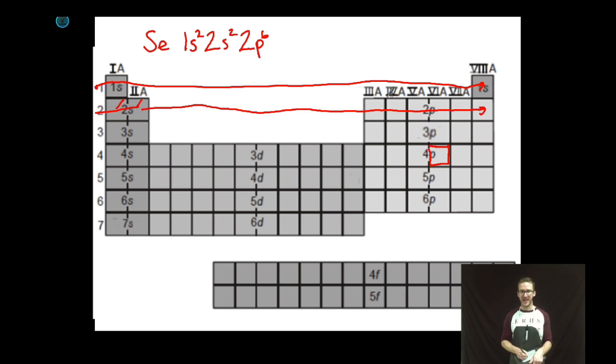2p6. Again, how do I know 6? There are 6 boxes. 3s, you guessed it, 2. Then we've got 3p6, 1, 2, 3, 4, 5, 6, 4s, 2, 1, 2. Be careful here.